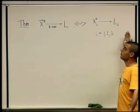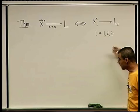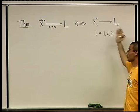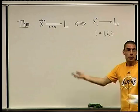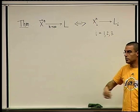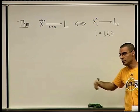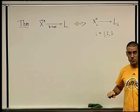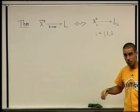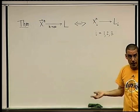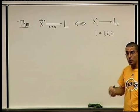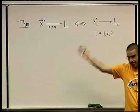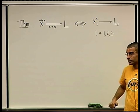So every theorem you may have had would apply. If you want to check if a sequence converges, you have to check the components. And for checking the components, you can use all the machinery that you developed in calc 1. You can use the sandwich theorem, a bounded sequence times a sequence that tends to 0, the product tends to 0. You know all these theorems. You can use arithmetic of limits. Everything you know just follows.